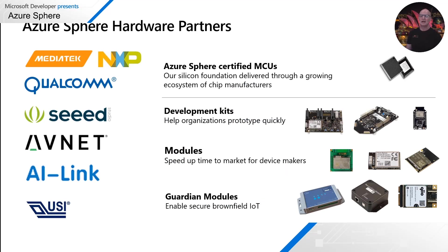I want to talk about the hardware ecosystem. MediaTek is the first partner to bring out an Azure Sphere certified microcontroller, and we've also made announcements with NXP and Qualcomm. There are three developer kits in the marketplace great for prototyping. Avnet's Azure Sphere Starter Kit includes sensors for temperature, humidity, and light, a gyro and accelerometer, and is extensible with Grove peripherals and micro click boards. SeeedStudio brought out the original reference design board and also recently introduced their mini board, both extensible with Grove peripherals. For bespoke solutions, there are pre-certified Azure Sphere modules from USI, Avnet, and AI-Link.